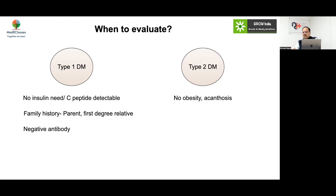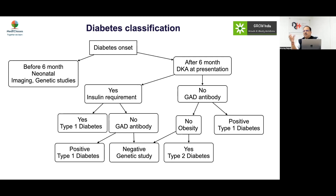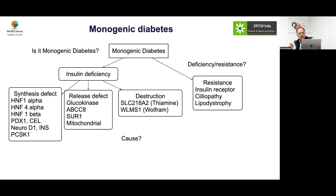In the setting of type 2 diabetes without obesity, the question arises whether all type 2 diabetics need to be obese. Generally they are overweight or above, and pre-diabetes patients tend to be more obese than diabetes patients because diabetic patients may have lost weight. If onset of diabetes is before six months of age, genetic studies for neonatal diabetes are needed. Beyond six months, if insulin requirement is low and antibody is negative, do a genetic study.